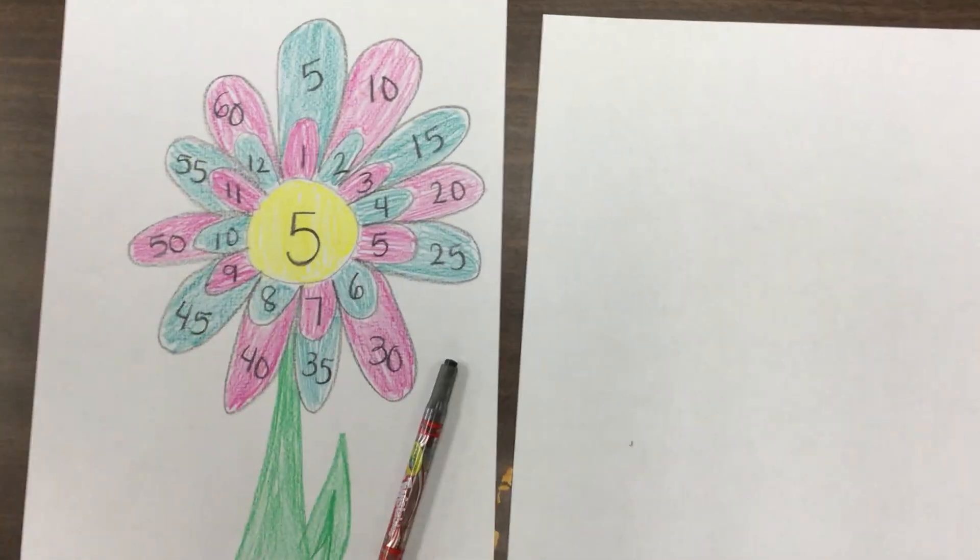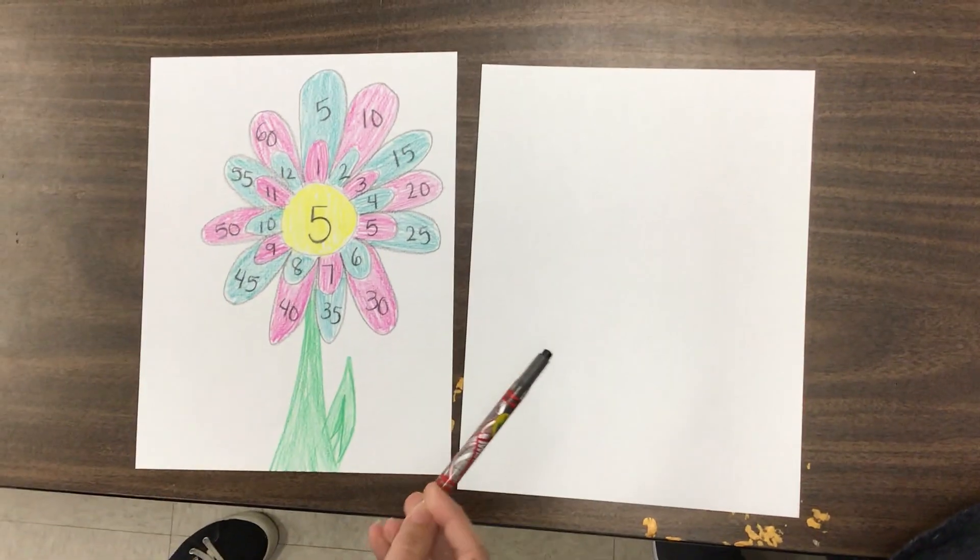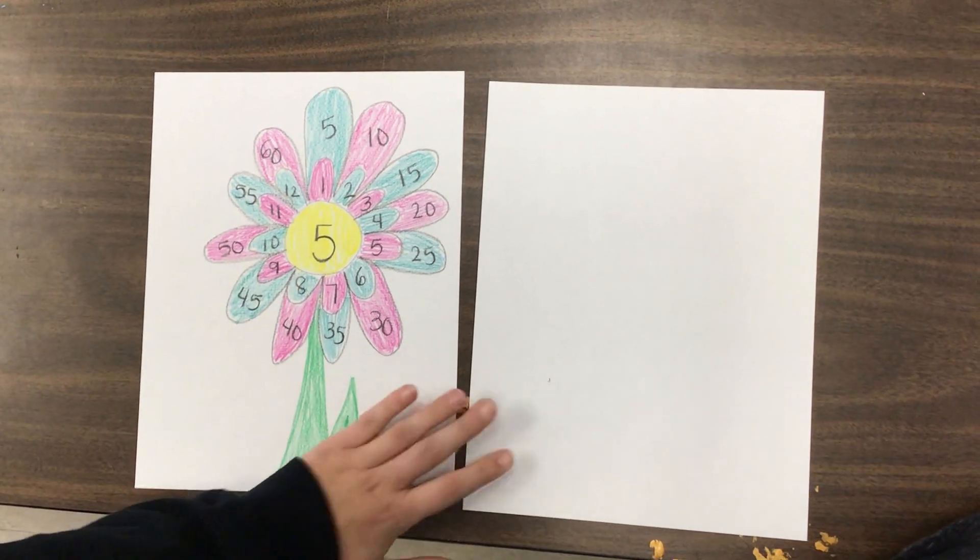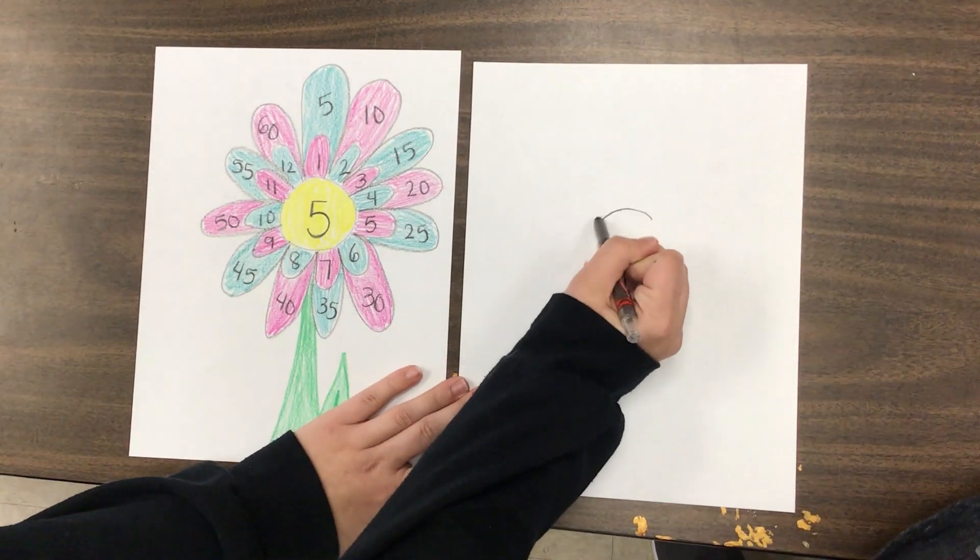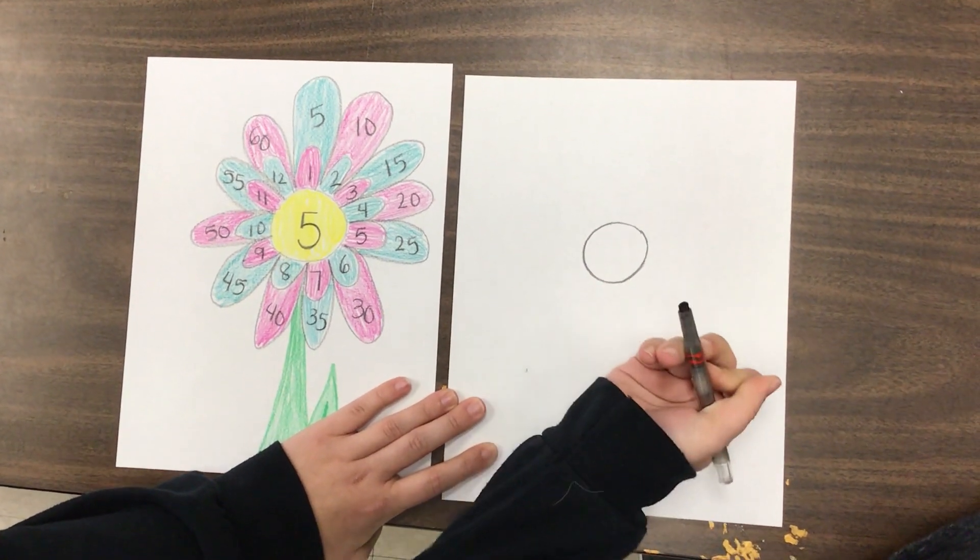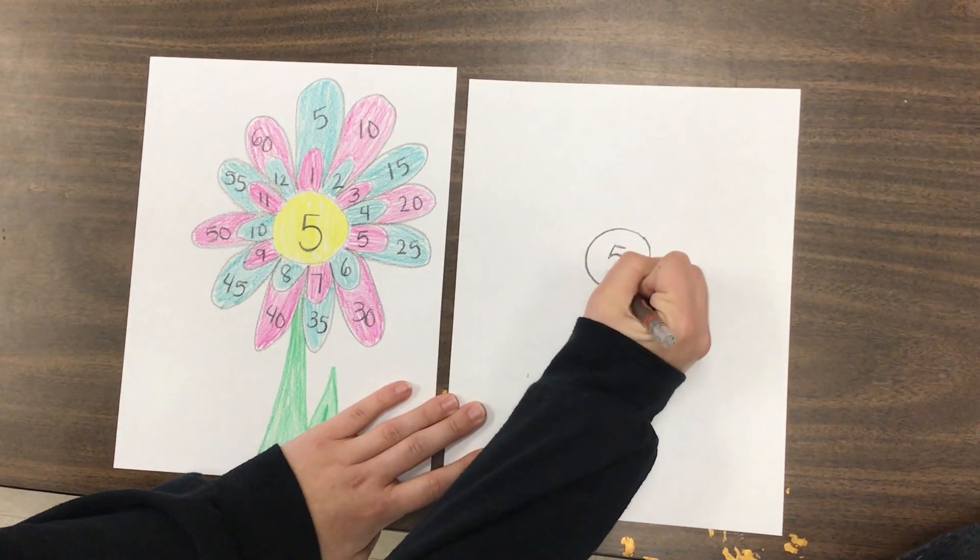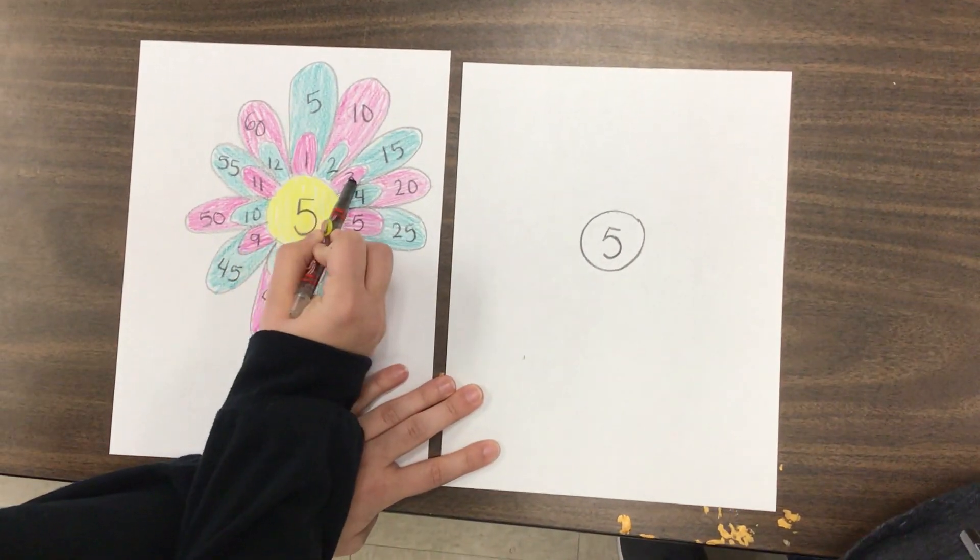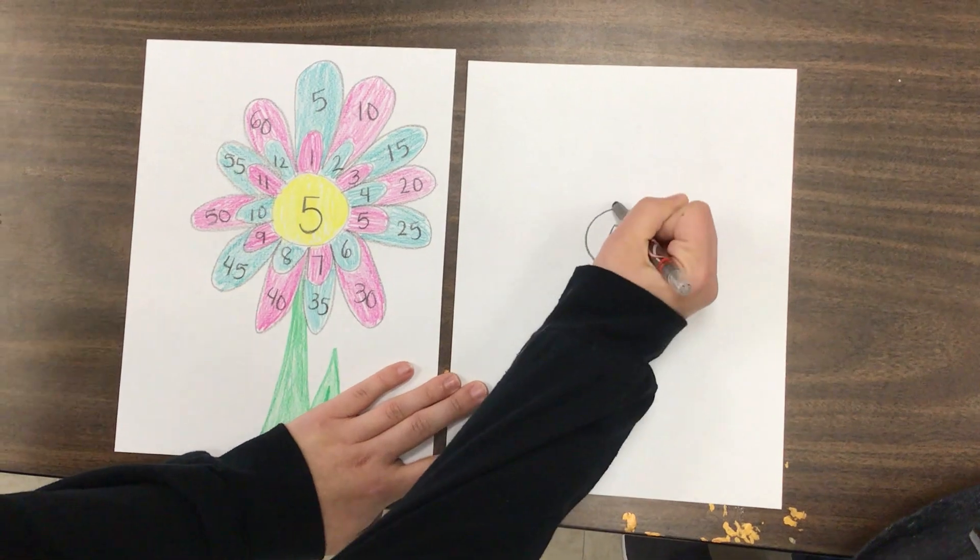Another fun way you could practice is if you have some colors and a paper at home, you could make a multiplication flower. First you would start by having your center part of your flower and you can choose whatever fact that you want. You would put the number in the middle and then you would need 12 small petals and 12 big petals.